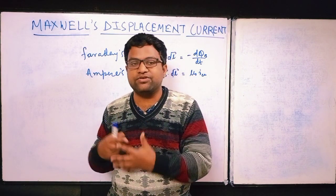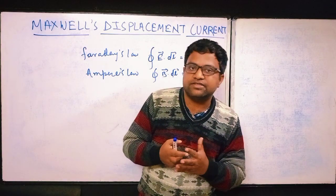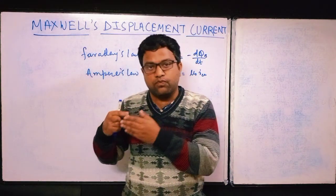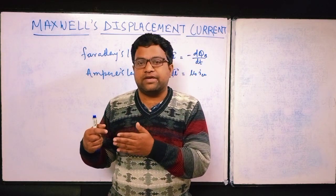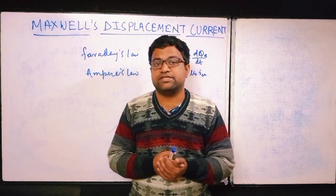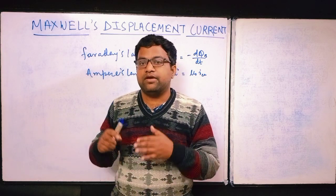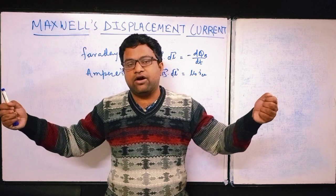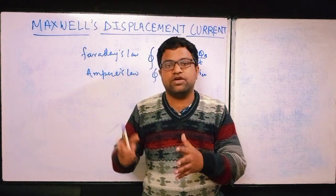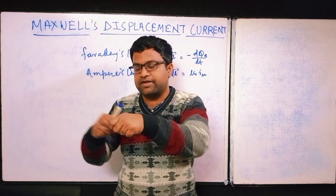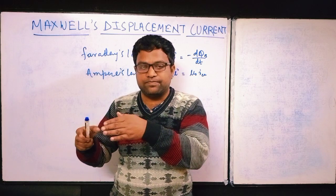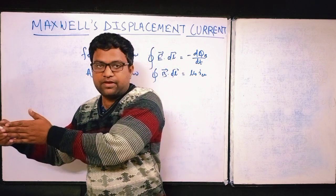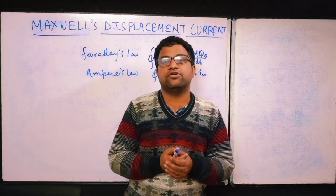This theory tells us that electromagnetic waves carry energy — we will calculate the Poynting vector in the next video. We got the idea of the electromagnetic spectrum: light is also an electromagnetic wave with electric and magnetic components. The electric field and magnetic field move together, perpendicular to each other, in an electromagnetic wave.